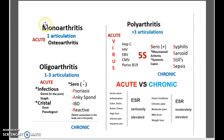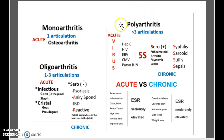When you're dealing with monoarthritis, it's generally going to be acute. Same for oligoarthritis and polyarthritis. But when you're dealing with seronegative, it is generally going to be chronic. Same with seropositive.